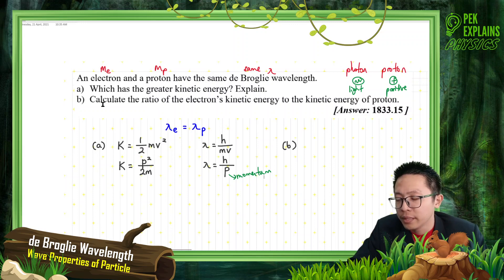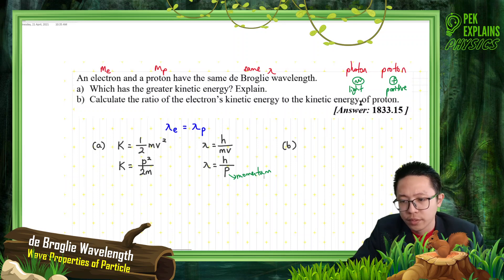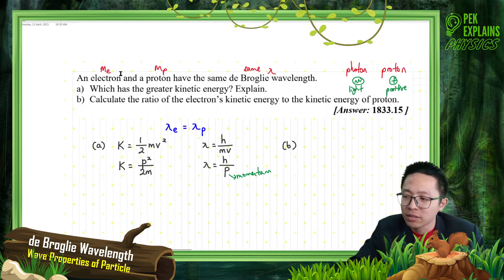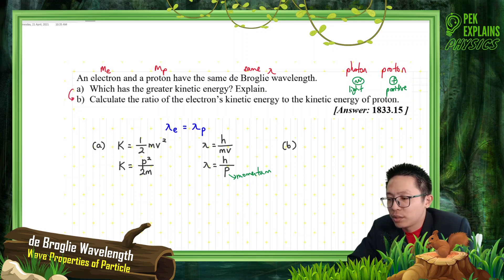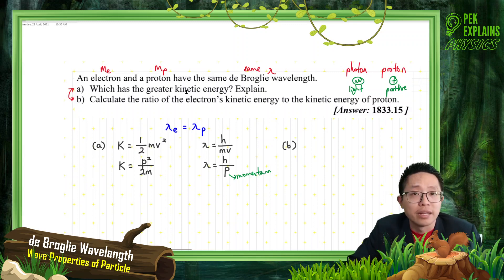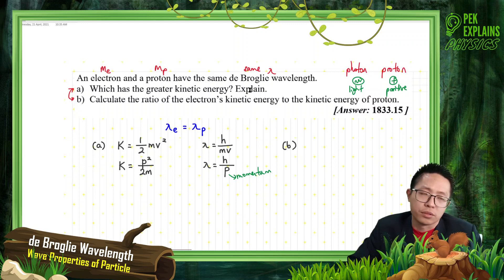Looking at question B, it asks us to calculate the ratio of electron's kinetic energy to the kinetic energy of the proton. So if we find out that ratio, we should be able to explain which one has the higher kinetic energy. Actually, question B should be asked before question A — you should find the ratio first, because once you know it, it is obvious which one has higher kinetic energy. Explain by calculation.